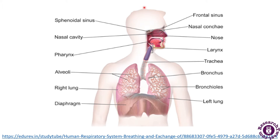As you can see, these are some of the parts of the respiratory system, which include the organs as well. There is the nose, also known as the nasal cavity, the larynx, trachea, bronchus or bronchi or bronchioles. There are two lungs — a left lung and a right lung — and below these is the diaphragm, which helps in contraction and relaxation.